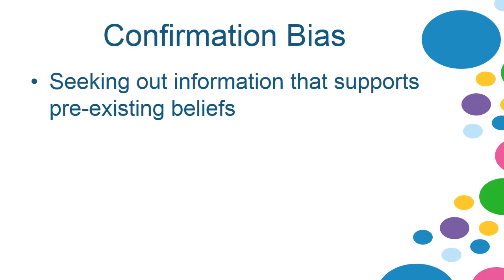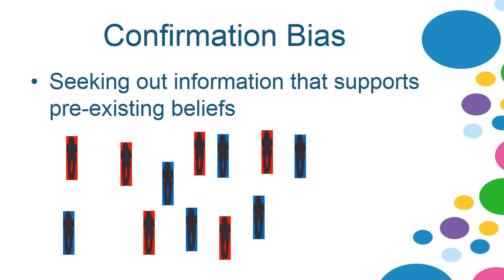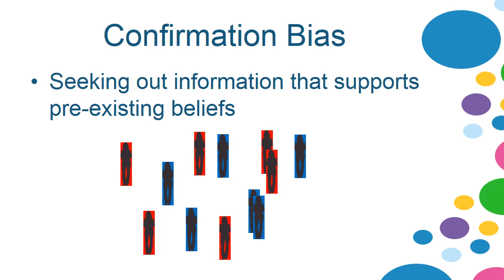Confirmation bias occurs when people seek out information that supports their preexisting beliefs. Here we have a group of women — Republicans and Democrats. If the Republicans want to learn more about a political issue, they are only going to talk to other Republicans. And when Democrats want to learn about a particular issue, they're only going to talk to other Democrats. So both of these women are only talking to people who will have information that supports their preexisting beliefs. They can think to themselves, well, I talked to a lot of people and they all agreed with me — feeling like they've done a good job vetting their opinions, when actually they were only seeking out information that already confirmed what they believed.